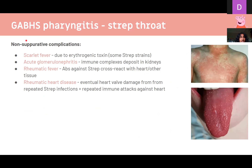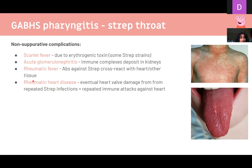Non-suppurative complications include scarlet fever, caused by strep toxins, producing a body-wide rash and strawberry tongue. Acute glomerulonephritis occurs when immune complexes made against strep deposit in the kidneys, causing immune cell attack. Rheumatic fever occurs because bacterial proteins like the M protein are structurally similar to human proteins, so anti-strep antibodies cross-react with the heart and other tissues, causing arthritis or cardiac inflammation. Rheumatic heart disease follows repeated immune attacks causing permanent heart valve damage.